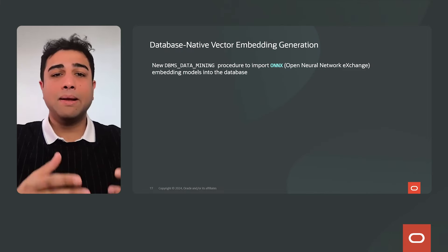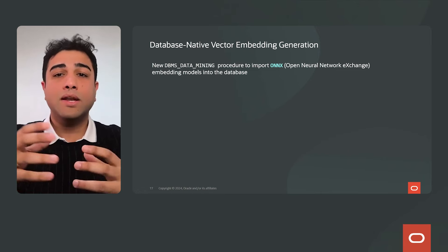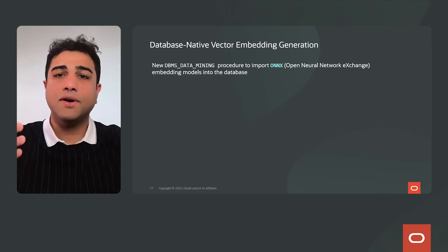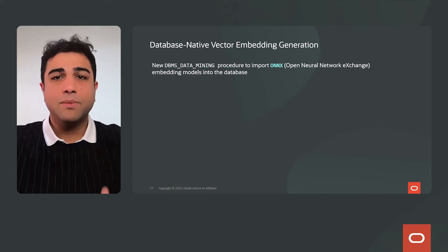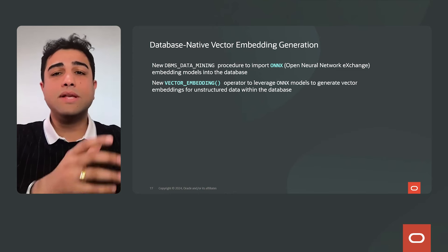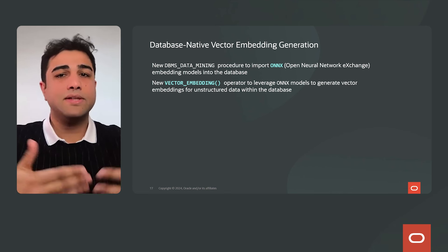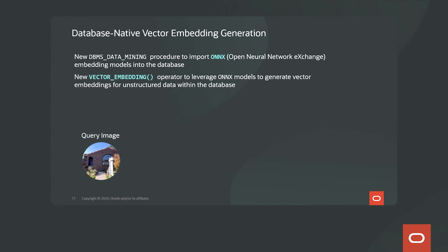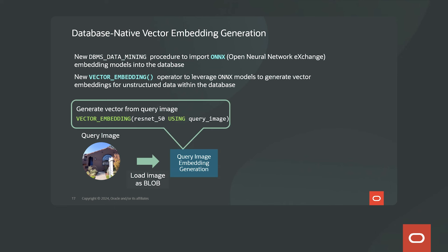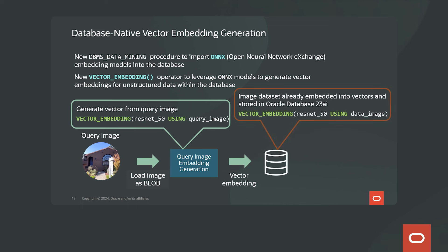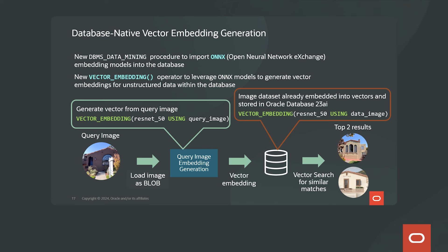We have a DBMS data mining package augmented with a special procedure to load open-source ONNX embedding models — ONNX stands for Open Neural Network Exchange. You can then use a vector embedding SQL function to leverage ONNX models to generate vectors for your unstructured data. For example, you have a query image of a house and want to find similar houses in your data center. You load the ONNX model ResNet-50, pass it to the vector embedding function along with the query image, get a vector, and AI Vector Search finds the top matches of similar houses.